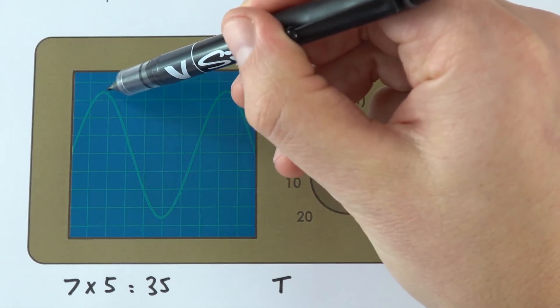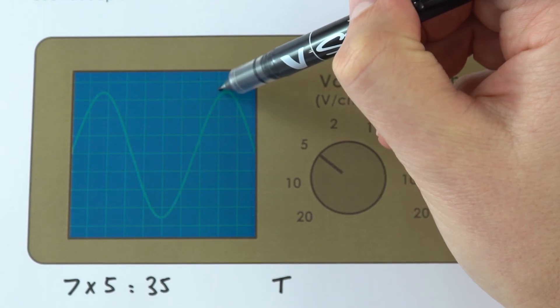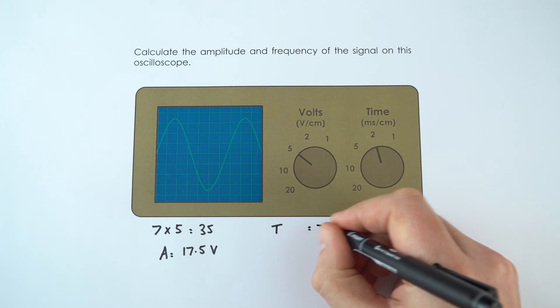I'm going to say this is equal to one, two, three, four, five, six full squares. I've got half a square there and half a square there. So again that's going to be equal to seven squares.